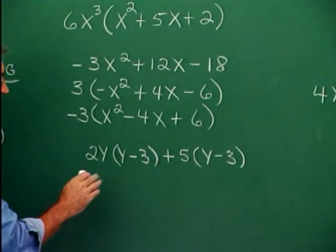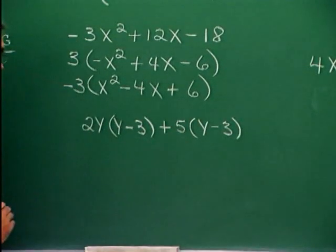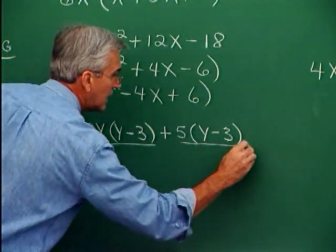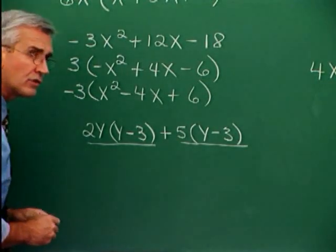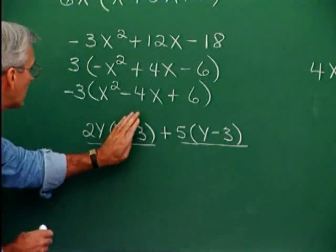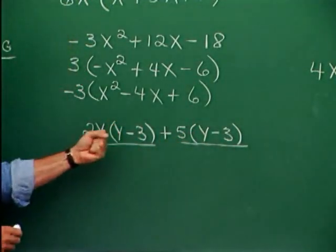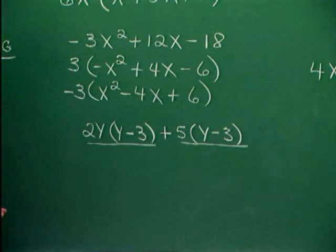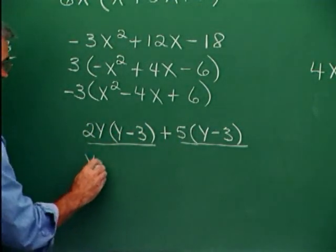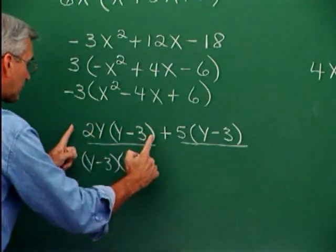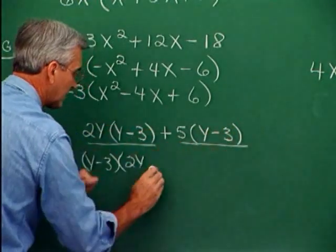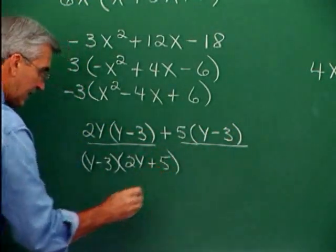Here's another situation. In this expression, we only have two terms, and in this problem the quantity y minus 3 is playing the role of a single letter. If it were a single entity, we'd understand we could pull that single entity out as a common factor. We can pull y minus 3 out of these two terms. When we pull y minus 3 out of the first term, we're left with 2y. When we pull y minus 3 out of the second term, we're left with plus 5. So here is the correct factored form.